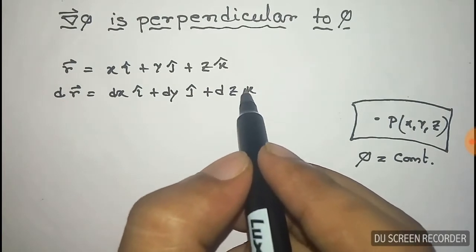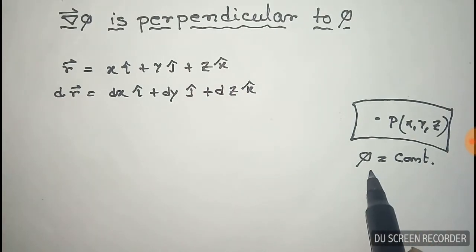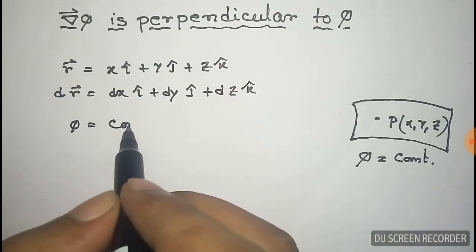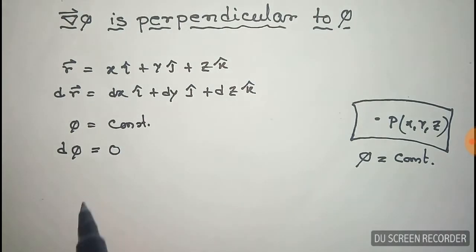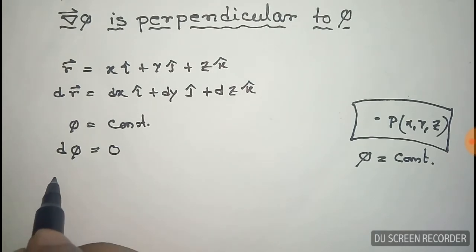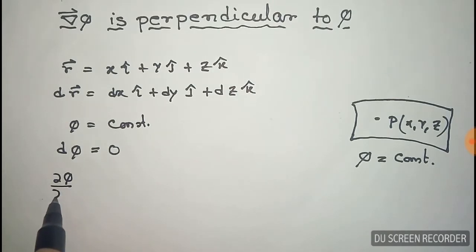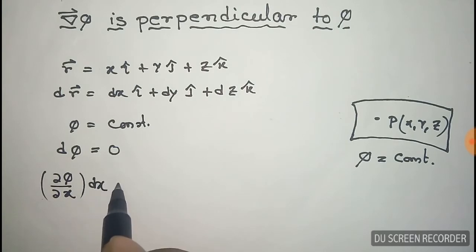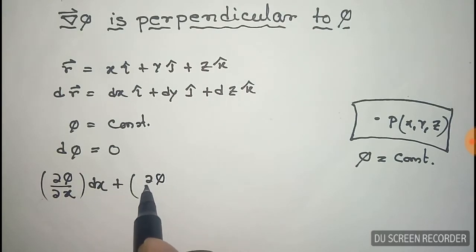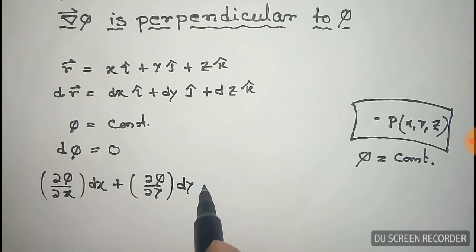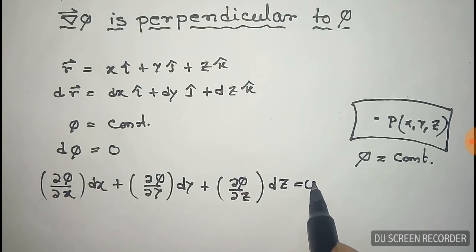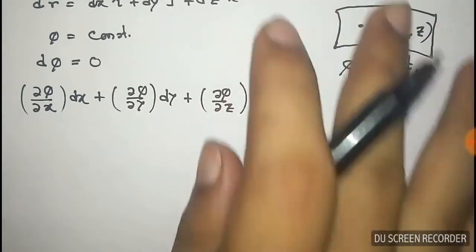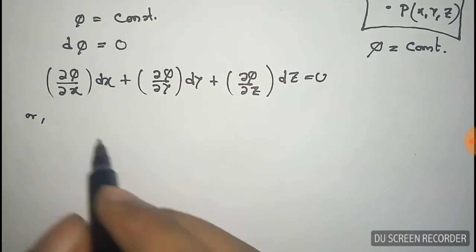Now, since φ is a constant scalar quantity, its total derivative dφ is zero. We can write dφ as (∂φ/∂x)dx + (∂φ/∂y)dy + (∂φ/∂z)dz, and all of this equals zero.